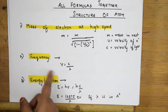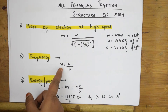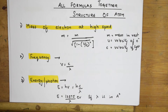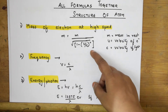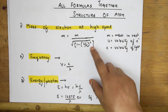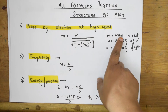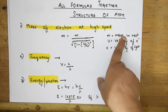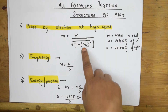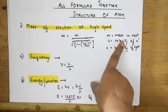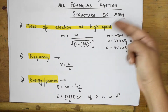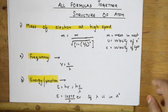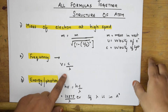Next, when frequency is given to you, it is denoted by ν (nu), which equals c divided by λ (lambda). We've already covered this. You can take m as the mass of the body, u as the velocity of the electron, and c as the velocity of light. The values will be given to you directly to apply in the formula.